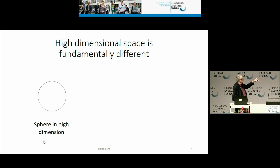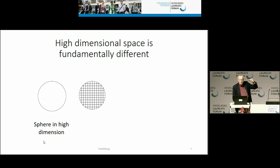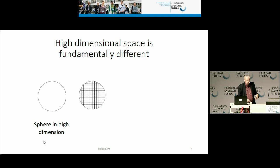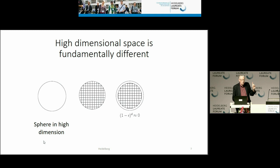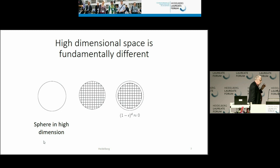Here I have a sphere in high dimensions, and I want to calculate its volume by dividing it into little d-dimensional cubes. If I shrink the sphere by a factor of one minus epsilon, each cube's dimensions become one minus epsilon, and raising that to the power of the dimension — say 100 — goes to zero. So there's no volume in the inner sphere, which means all of the volume is close to the surface.